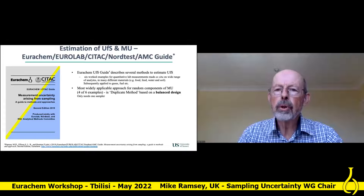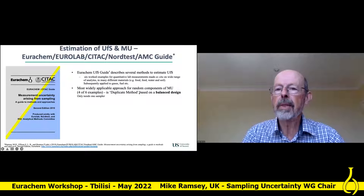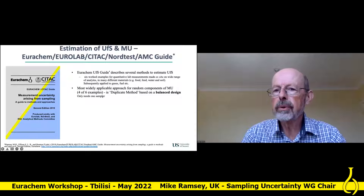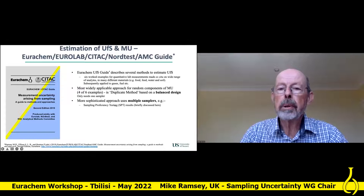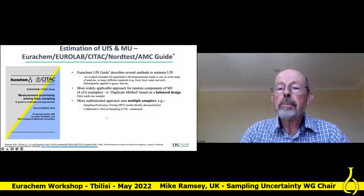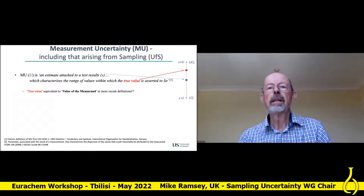The most widely applied approach in the guide — four of the six examples — uses the duplicate method using a balanced design, and it needs only one sampler, and I'll focus on that. But there is a more sophisticated approach using the inter-lab approach with multiple samplers, methods, sampling proficiency data. I'll include one little slide on that, and also collaborative trials in sampling for validation.